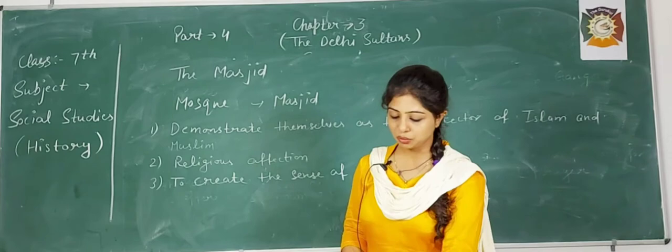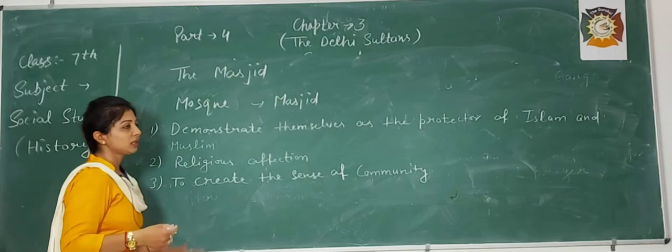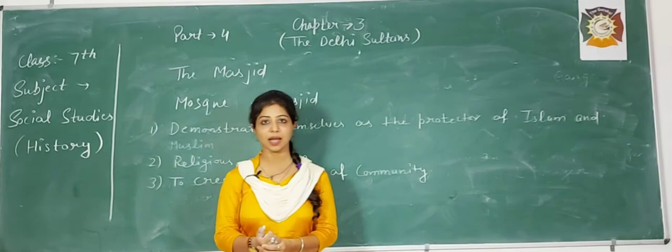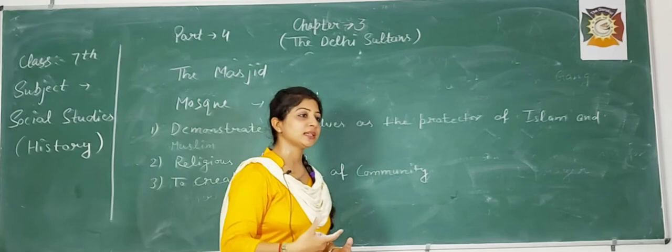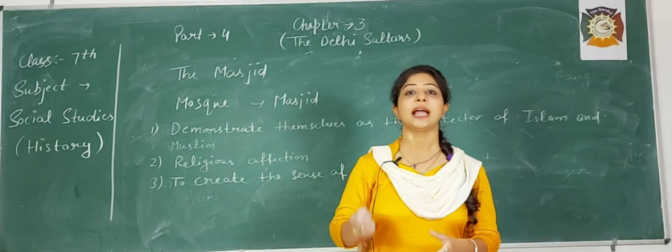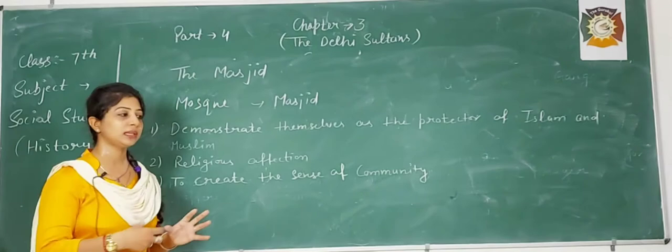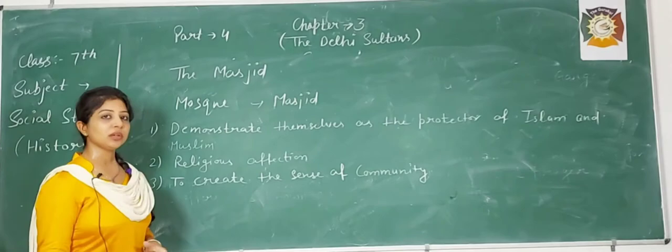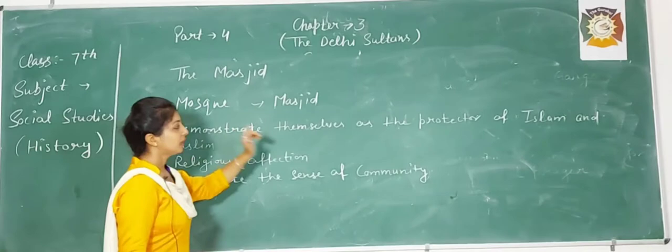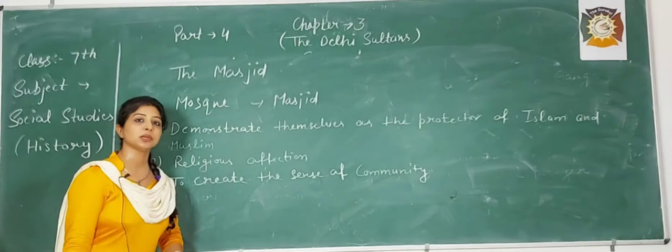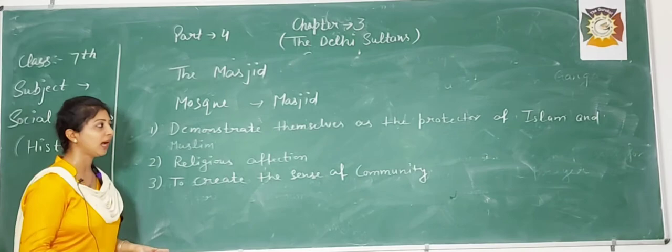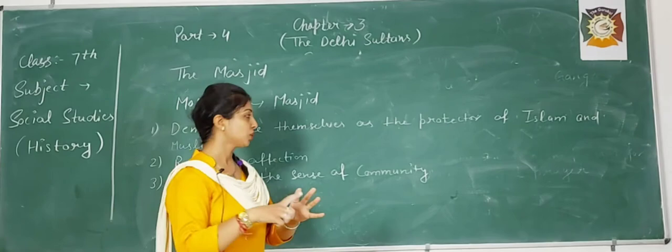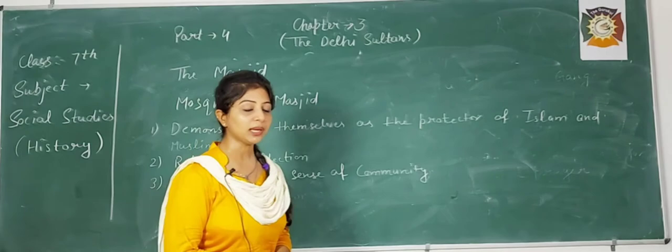So Masjid is a place where Muslims prostrate in reverence to Allah. There is a congregational mosque — a main mosque in the city where Friday communal prayer is offered, known as Jama Masjid. Delhi Sultans built many mosques all over the subcontinent to demonstrate themselves as protectors of Islam and Muslims, due to religious affection, and to create a sense of community and belongingness among the people.